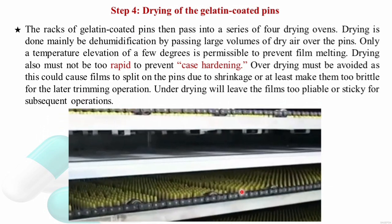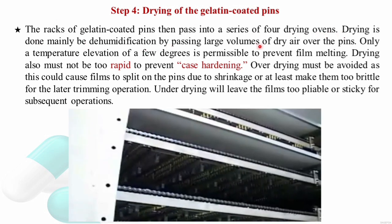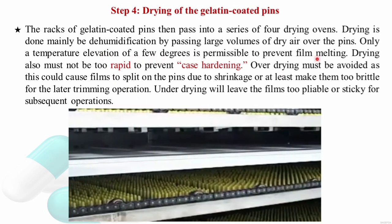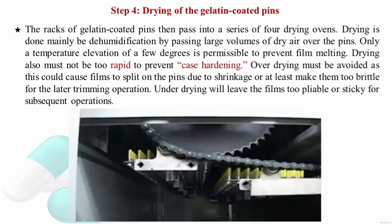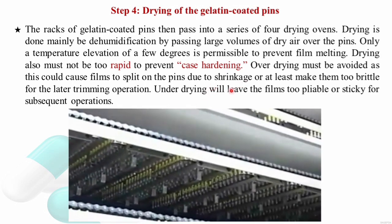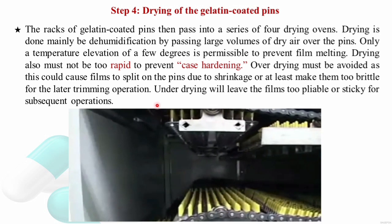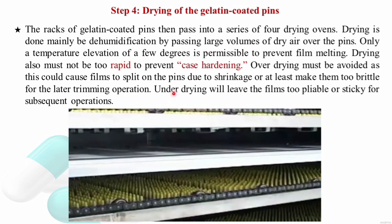Step 4: Drying. The rack of gelatin-coated pins is passed through a series of four drying ovens. Drying is done mainly for dehumidification by passing large volumes of dry air over the pins. Only a small elevation of temperature is permissible to prevent the film from melting. Drying must not be too rapid to prevent case hardening. Over-drying must be avoided as it causes shrinkage and may cause the film to split or become too brittle for trimming. Under-drying must also be avoided as it leaves the film too sticky for subsequent trimming and cutting operations.